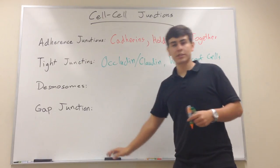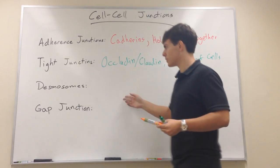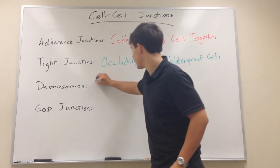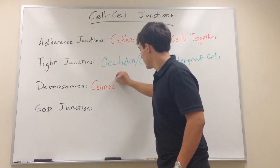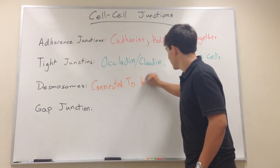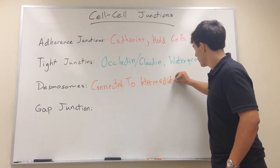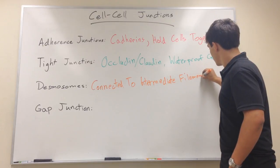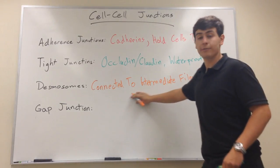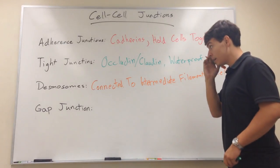Desmosomes are important for cells that undergo mechanical stress and we didn't talk too much about what they're comprised of. But what we did go over is that it's connected to intermediate filaments in cells. And so intermediate filaments, if you know, are cytoskeleton proteins inside the cell.